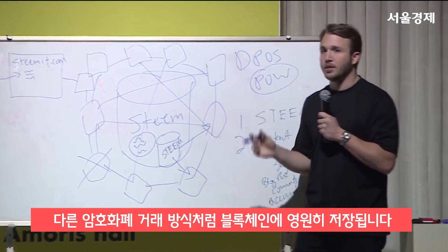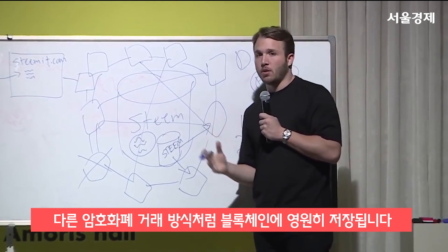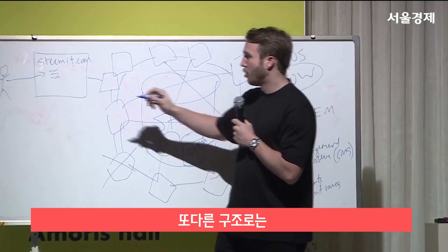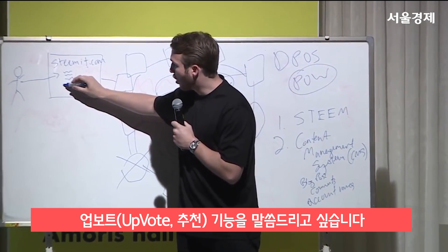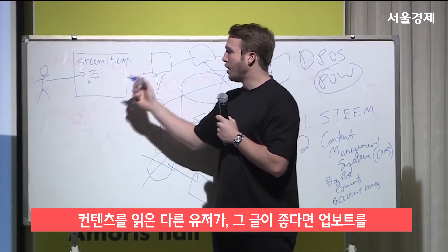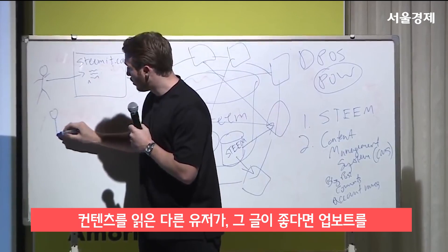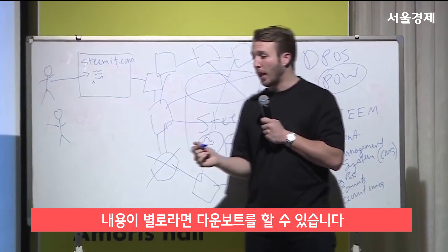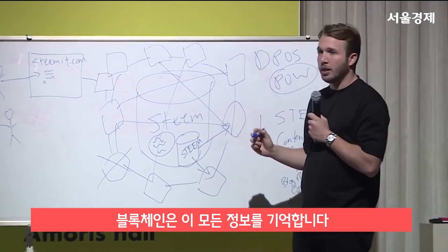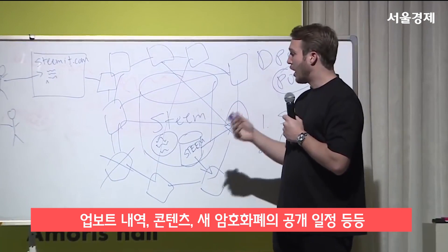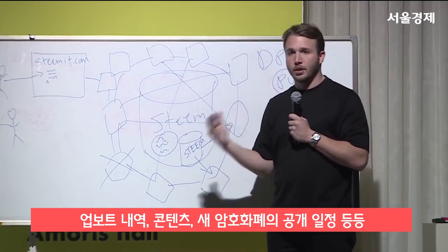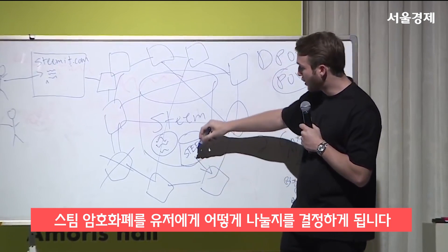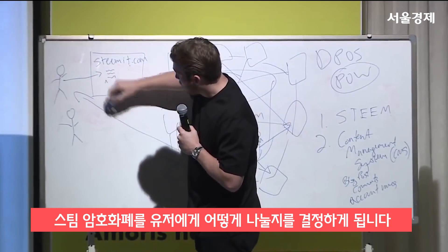And once it's on the blockchain, it stays on the blockchain forever, just like all the cryptocurrency transactions. There's also another data structure, which are upvotes, where basically other users are reading the content and upvoting it if they like it, or downvoting it if they don't. The blockchain takes all that information — the upvotes, the content, and the scheduled release of new cryptocurrency tokens, new Steem tokens — and decides how to distribute those to the end users.